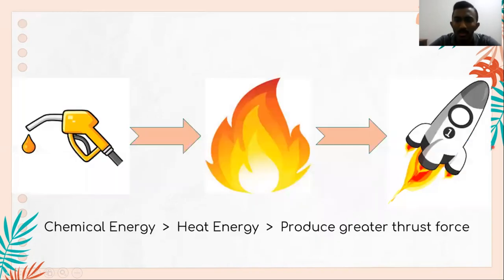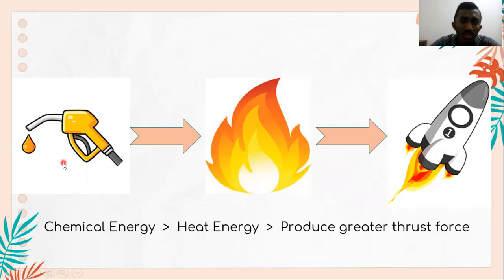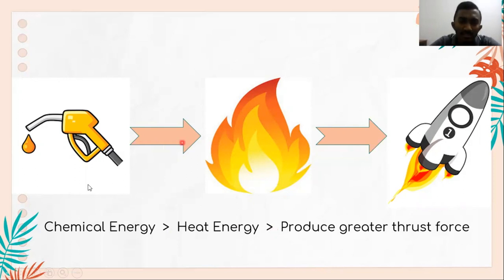Next, regarding the conservation of energy — the rocket creates thrust force, and the energy needed for that comes from the chemical energy of the fuel, which is converted into heat energy and work. The heat energy comes from combustion of the fuel, where the breaking of chemical bonds occurs. Higher energy is required to create higher thrust force to launch the rocket. This is how the principle of conservation of energy applies in a rocket.